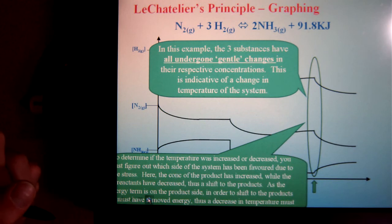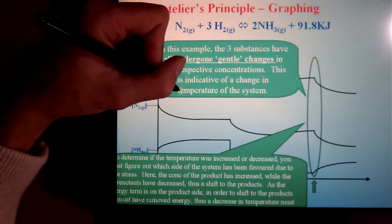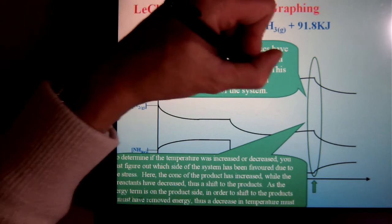Now for this example, you'll notice there aren't any sharp spikes. They're all, all three are kind of gentle curves. Either increases or decreases. When that happens, that means I've had a change in temperature.